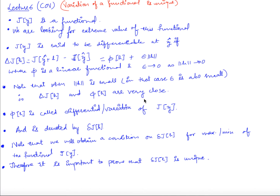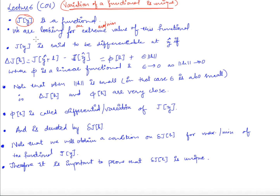Welcome to this sixth lecture on calculus of variations. In this lecture, we will prove that the variation of a functional is unique. We have this functional j of y and we are looking for an extreme value — the maximum or minimum value — of this functional j of y.